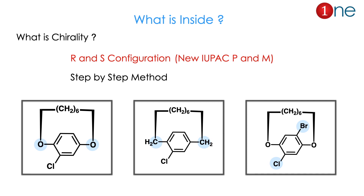Here is what is inside this video: first we will see what is chirality, then we move on to planar chirality, then we will see how to find R and S configuration — nowadays it is being called P and M configuration — and then we will see how to find the configuration of some representative compounds.